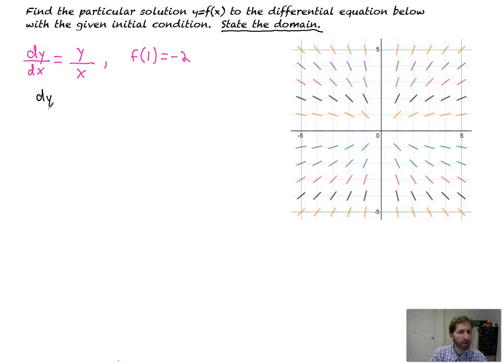Separate the variables. It's going to be dy over y equals dx over x. Multiply both sides by dx, divide both sides by y, and then we're going to integrate. So dy over y is the ln of the absolute value of y. That's equal to the ln of the absolute value of x, plus c.